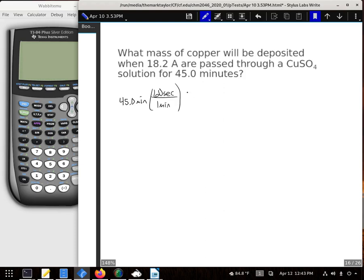And then I need to remember that amps are really coulombs per second. And then Faraday told us that there's 96,485 coulombs in a mole of electrons.